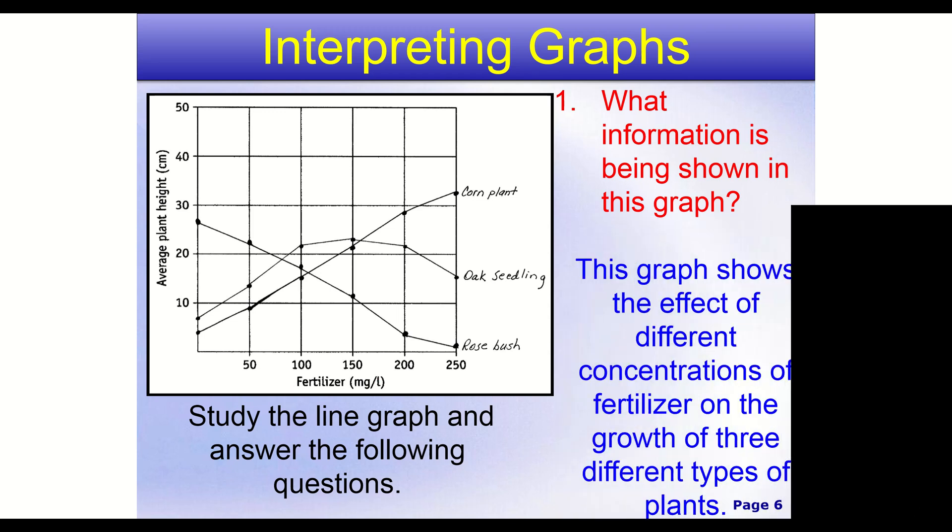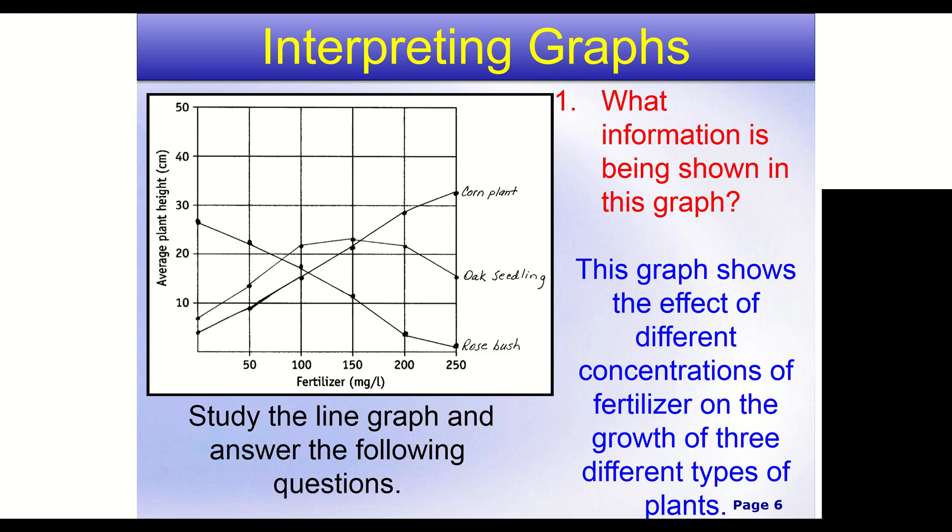So with those things in mind, we can say that our graph shows the effect of different concentrations of fertilizer. So the concentrations, we know, because that's what milligrams per liter, milligrams per liter is going to be our amount of mass per volume. If we remember, that's the unit for density. And a concentration is kind of like density. It means a very similar thing, how concentrated, in this case, is the fertilizer. How much of it do we have? On the growth of three different types of plants. So we have our different plants here.